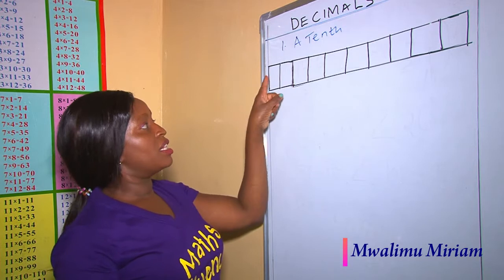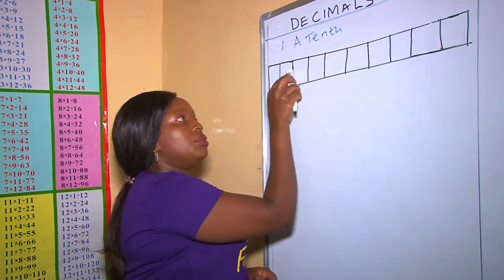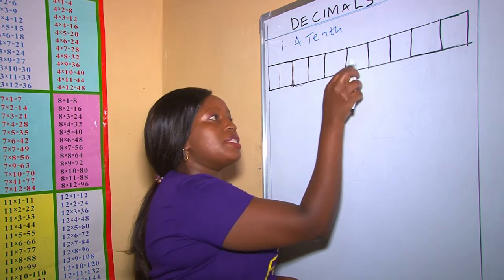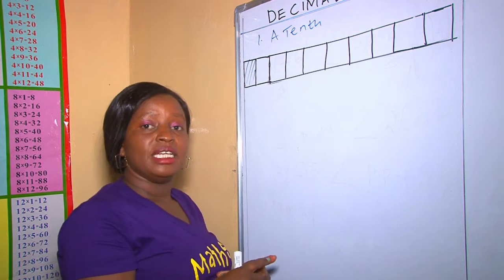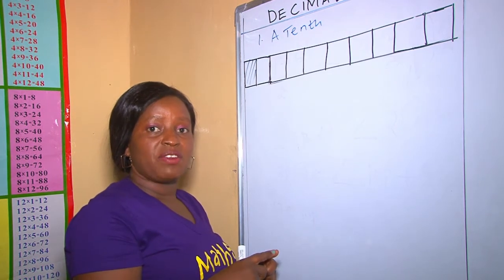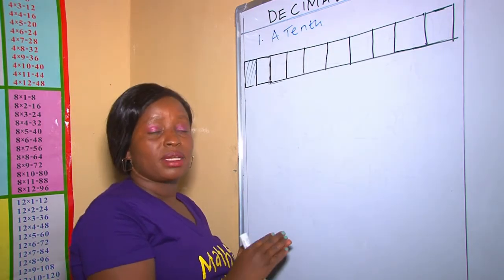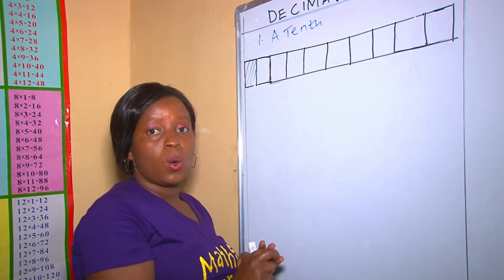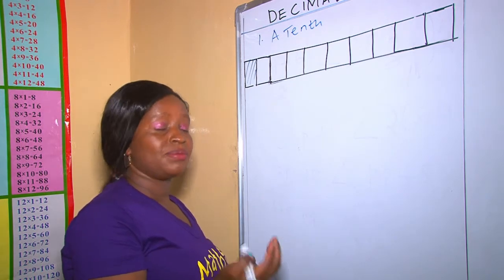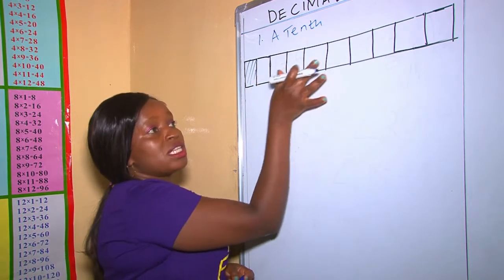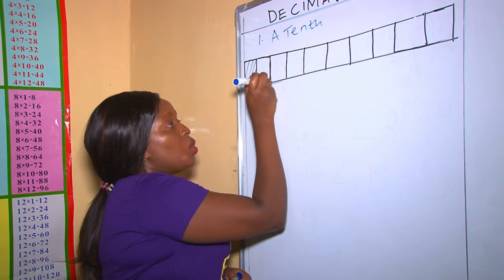In this diagram, there are 10 parts. Let's count together: 1, 2, 3, 4, 5, 6, 7, 8, 9, 10. This bar of chocolate has been divided into 10 parts. Out of the 10 parts, 1 is shaded. If I was to share this bar of chocolate with 10 students, what fraction will each child get? Because there are 10 parts, each child will get a fraction called 1 over 10.